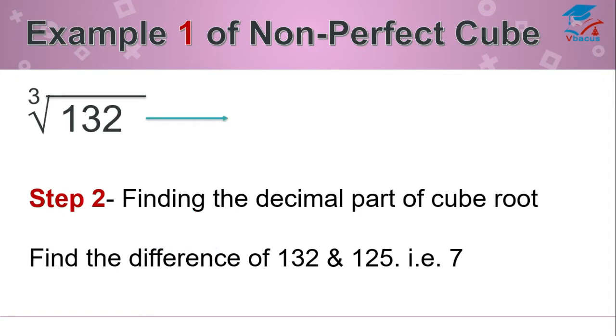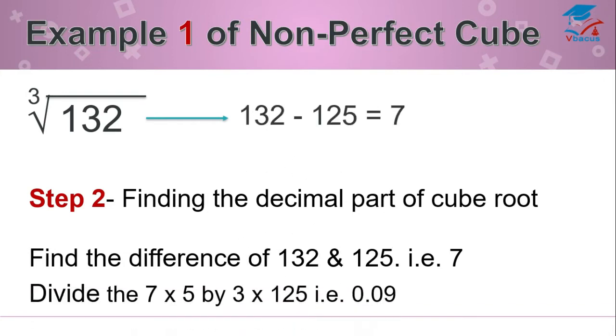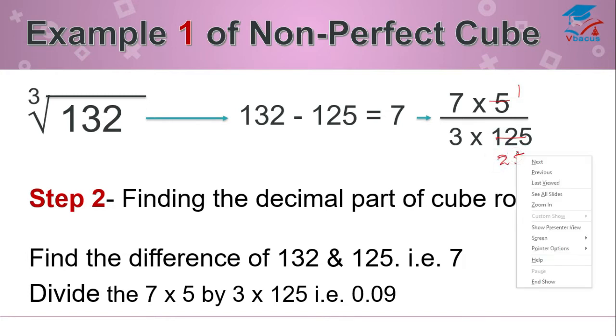So 132 minus 125 is equal to 7, and 7 should be multiplied by 5, that is the perfect cube root of 125. It should be divided by 3 times 125, that is perfect cube number of 5. Let us bring it to the lowest term. So 5 ones are 5, 5 twos are 10, and 5 fives are 25.